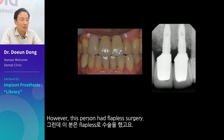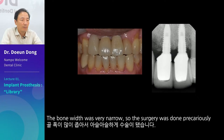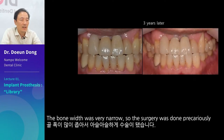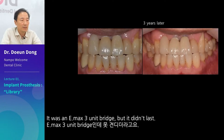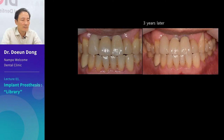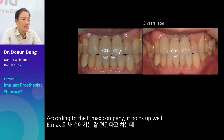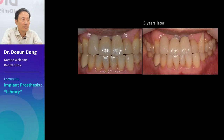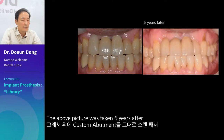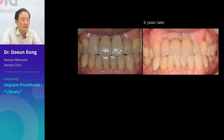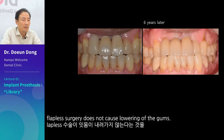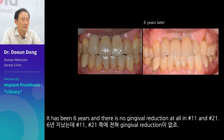However, this person had flapless surgery. The bone width was very narrow, so the surgery was done precariously. The patient came back after three years and the margin had broken — it was an EMAX three-unit bridge, but it didn't last; it broke after three years. The above picture was taken six years after scanning the custom abutment as-is and remaking it with zirconia. Flapless surgery does not cause lowering of the gums — after six years, there is no gingival reduction at all in No. 11 and No. 21.